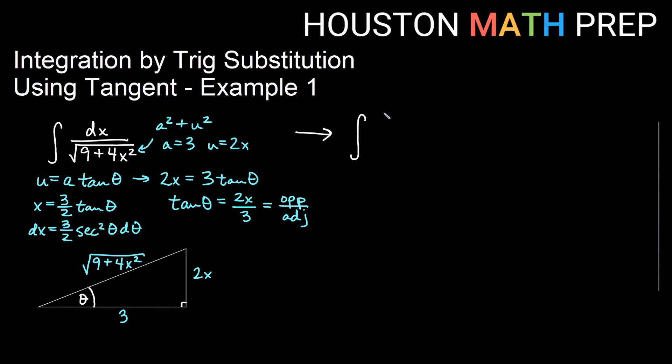For our dx, I'm going to plug this fraction in on top: 3 halves secant squared theta d theta. On the bottom, I have the square root of 9 plus 4. Now x squared is going to be this thing squared here.